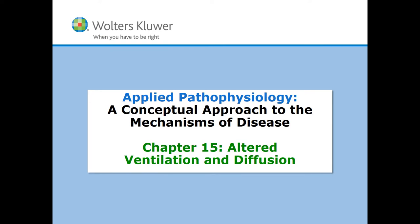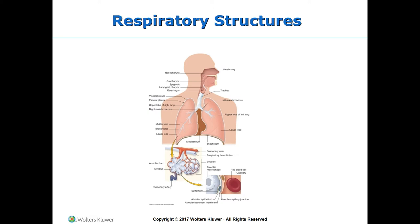Chapter 15 is about altered ventilation and diffusion. This is a view of the respiratory structure. Above the larynx are the upper respiratory structures, which consist of the nasal cavity, nasopharynx, laryngopharynx, and the larynx or voice box. Below the larynx, the lower respiratory structures include the trachea and bronchi — primary, secondary, and tertiary — and then the bronchioles.